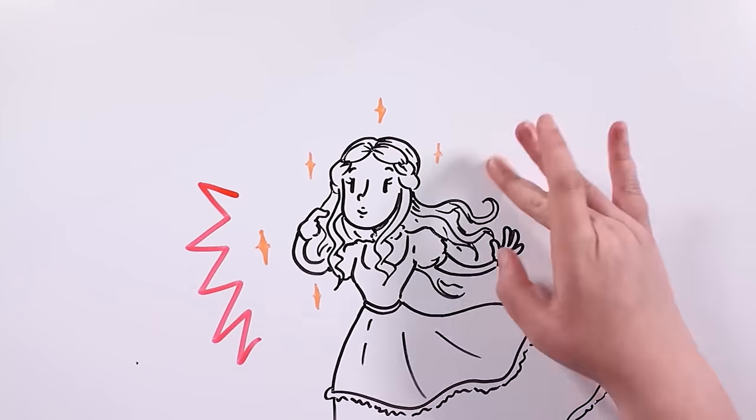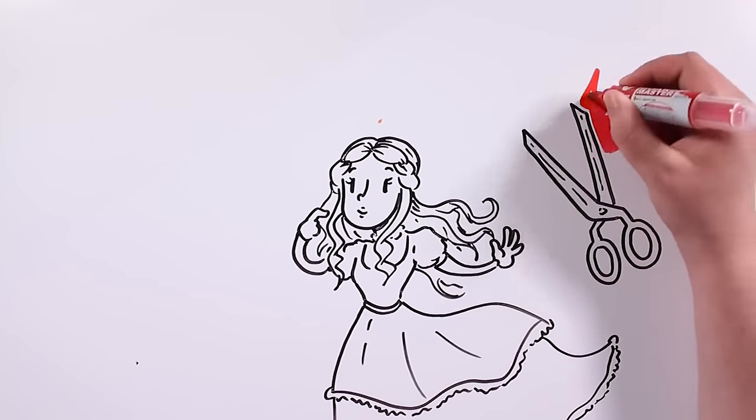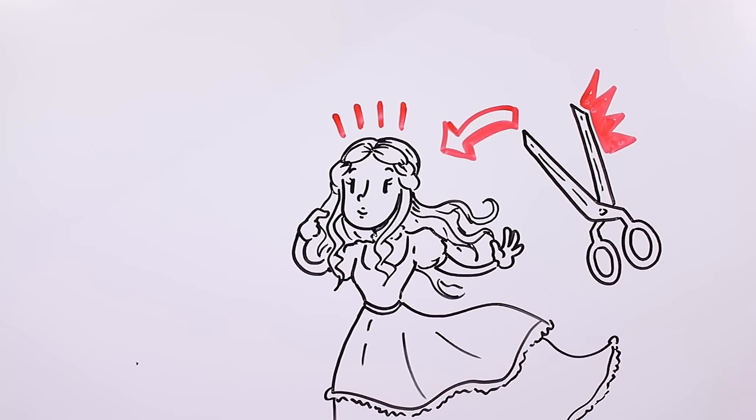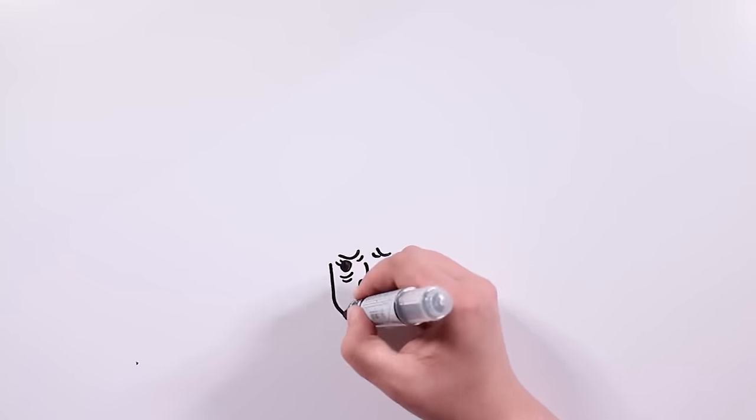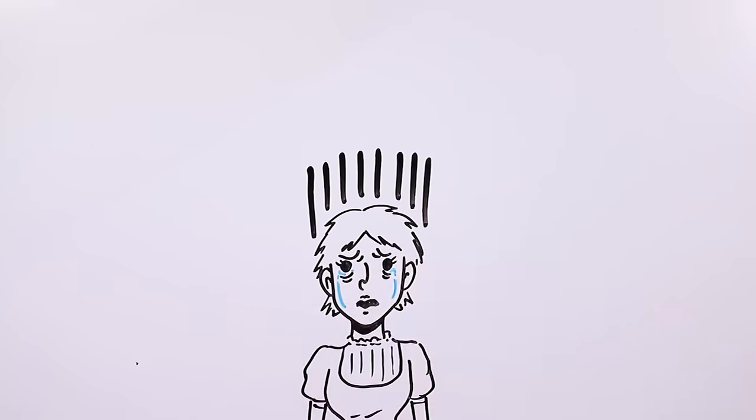This irritated others so much that one day someone decided to play a practical joke on her to punish her, cutting off her beautiful hair. Mary was devastated, and became so depressed that she ended up taking her own life – unable to wait for her hair to grow back.